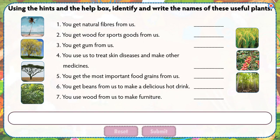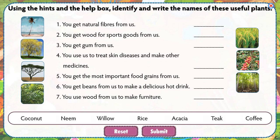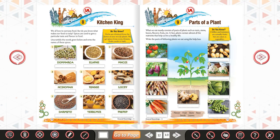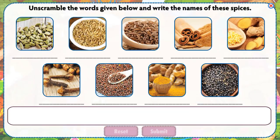Using the hints and the help box, identify and write the names of these beautiful plants. Unscramble the words given below and write the names of these spices.